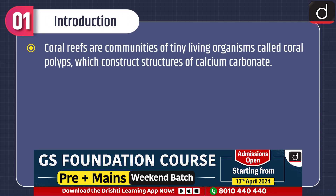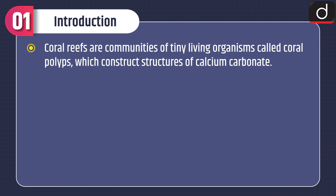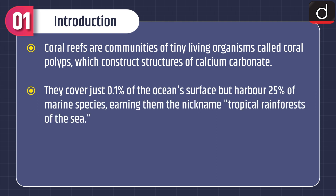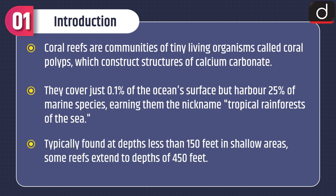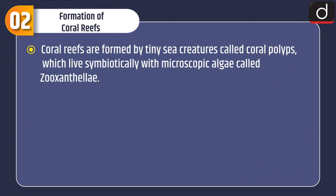Moving on to the introduction: coral reefs are communities of tiny living organisms called coral polyps, which construct structures of calcium carbonate. They cover just 0.1 percent of the ocean's surface but harbor 25 percent of marine species, earning them the nickname 'tropical rainforest of the sea.' They are typically found at depths less than 150 feet, though some reefs extend to 450 feet.